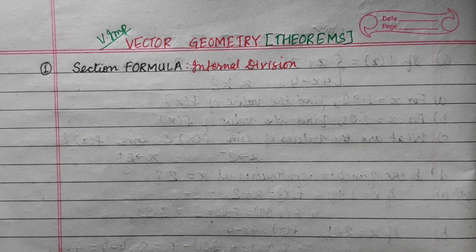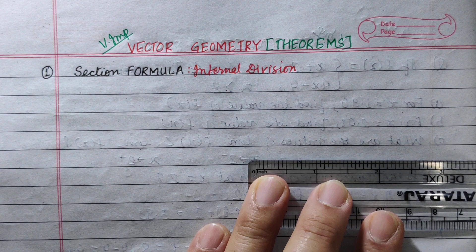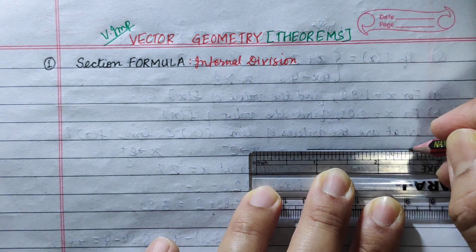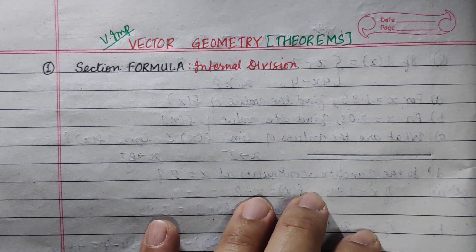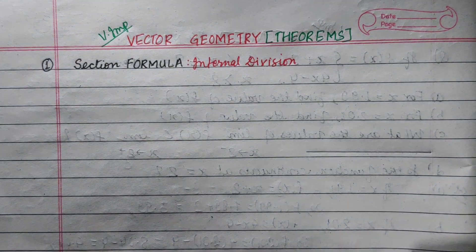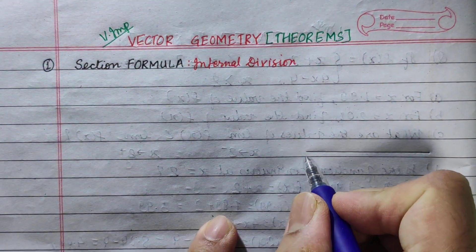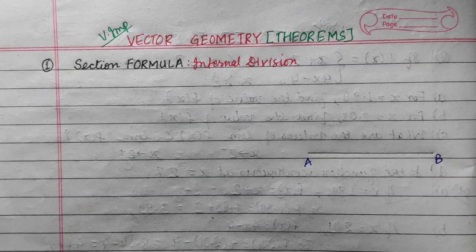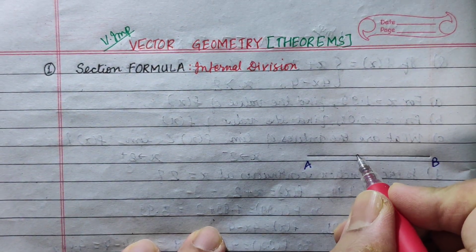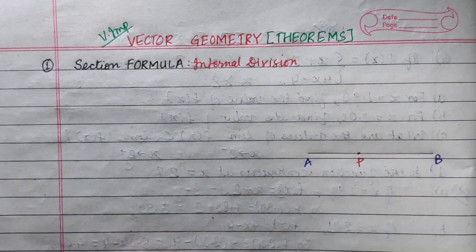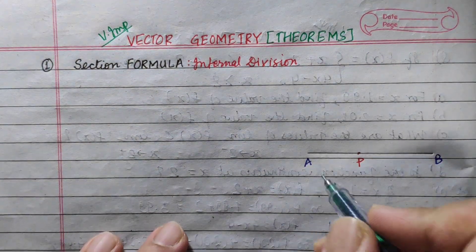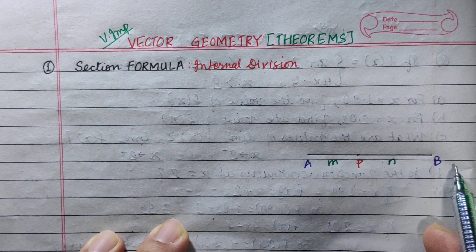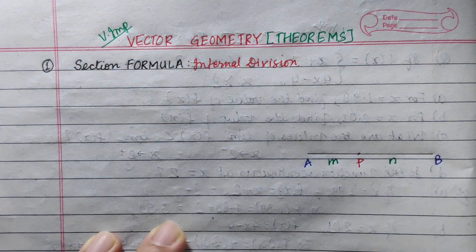Let's go to the section formula. For internal division, we have two points called A and B. Point P internally divides AB in the ratio m to n.